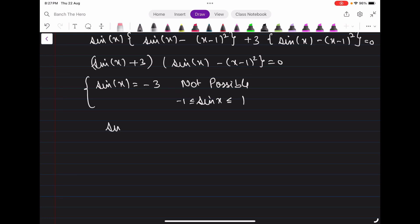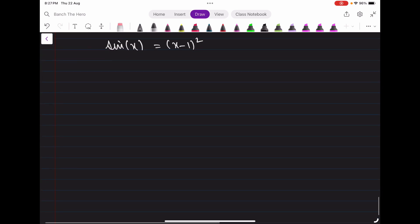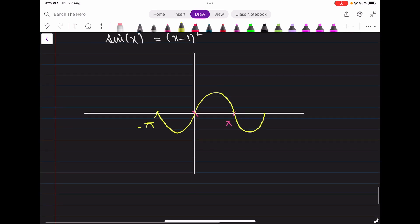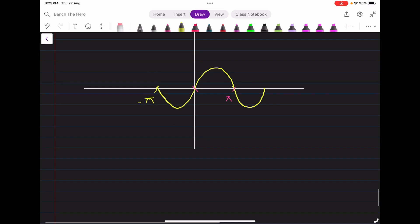Coming to the next case, sin(x) = (x - 1)². In order to solve this, we'll use the graphical method. This is the graph of y = sin(x) between -π to π. Now we need to check the graph of (x - 1)². We know (x - 1)² starts from one unit. This is somewhere 1, from here it will start. It will go like that.